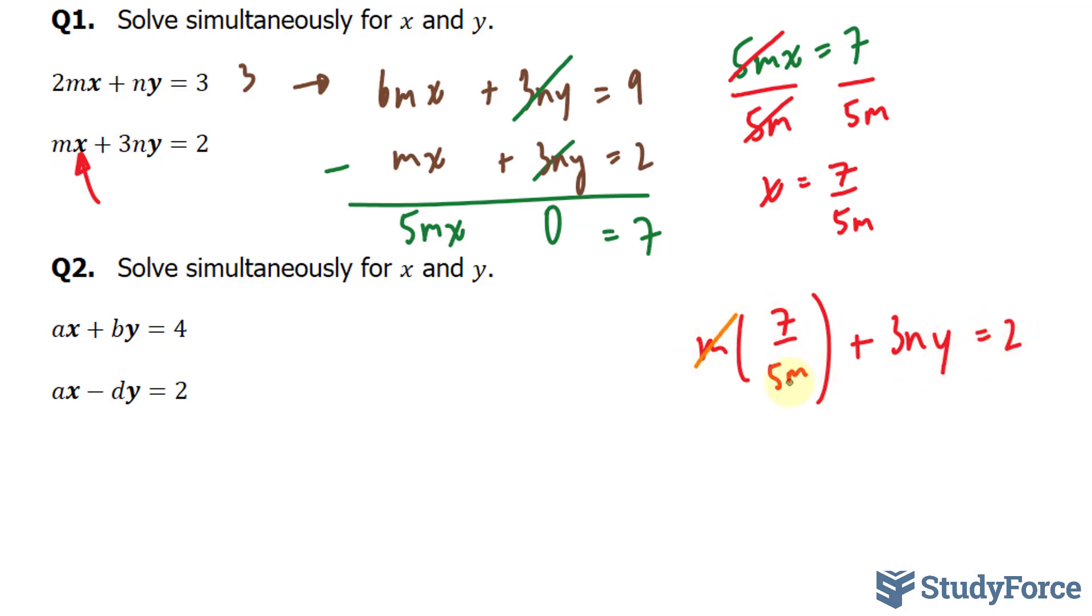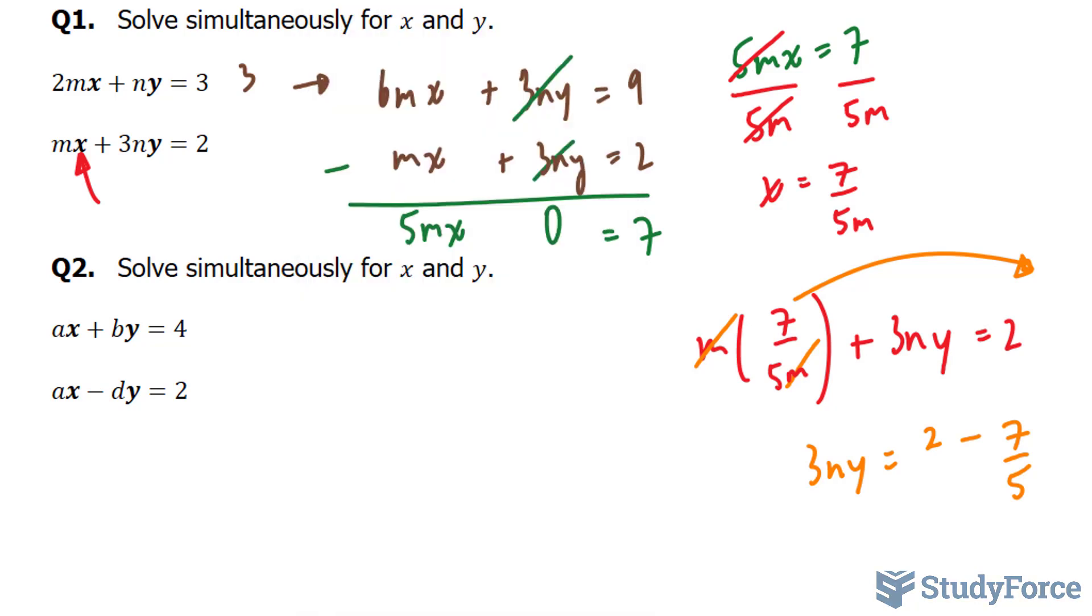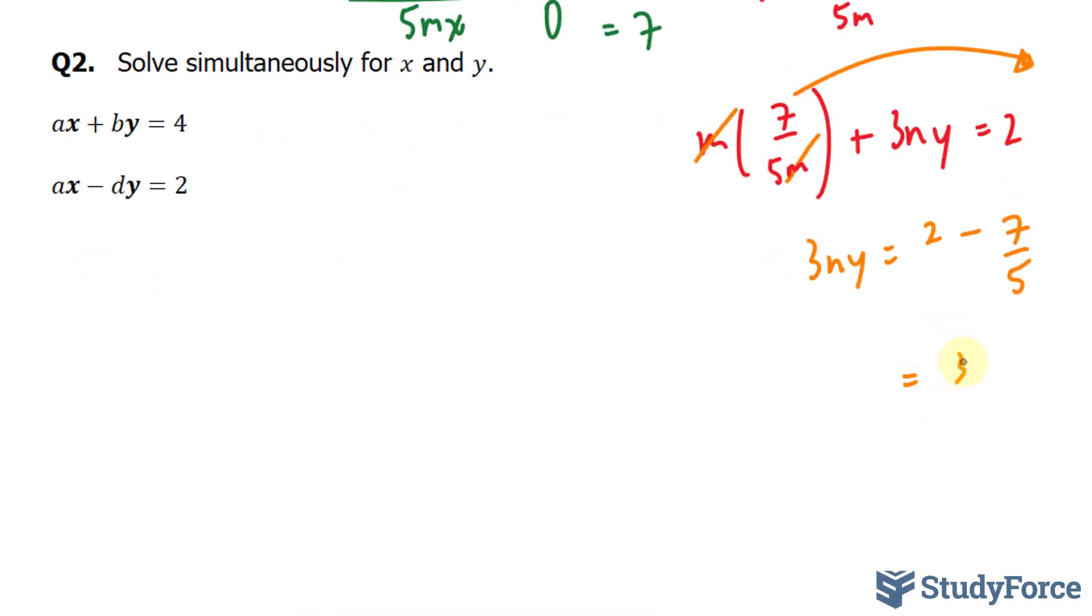This m and this m will cancel out, leaving us with 7 over 5 as one of the terms. And I'll take that term over to the other side. So now we have 3ny is equal to 2 minus 7 over 5. I'll use my calculator to figure out what this is. 2 minus 7 over 5, I'll put the fraction in brackets, gives me 3 over 5.